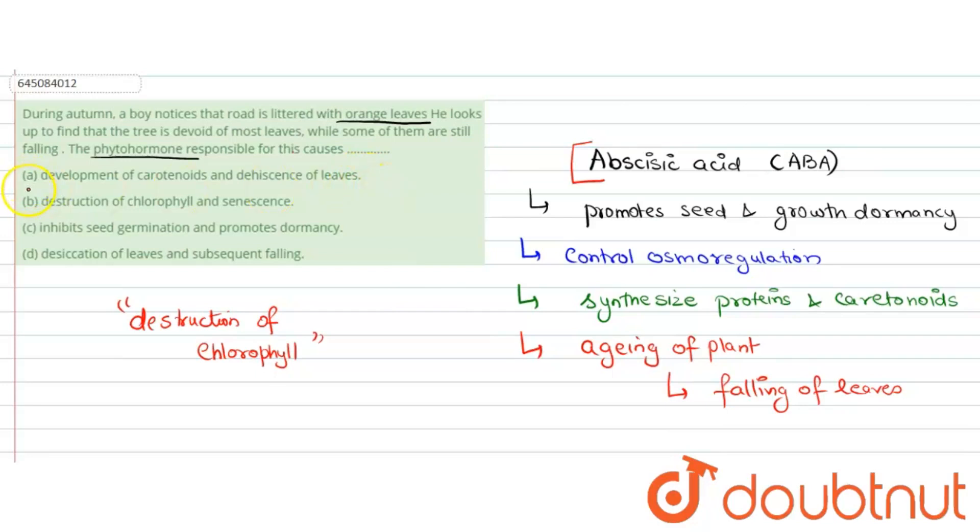Option A says development of carotenoids and dehiscence of leaves. This is a correct function of abscisic acid, but it is not relevant to our question, so this is wrong.